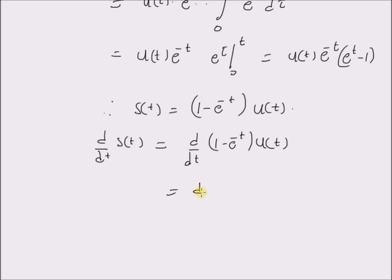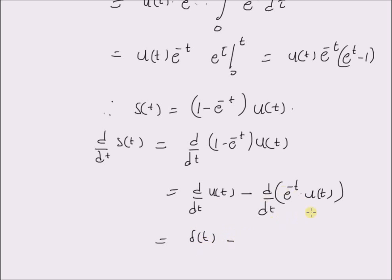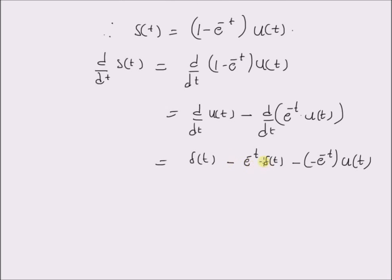This is equal to the derivative of the unit step signal minus the derivative of the product e power minus t into u of t. By using the product rule, the derivative of the unit step signal is the impulse signal delta of t. Minus, by using the product rule, we have e power minus t into delta of t minus minus e power minus t into u of t. Clearly this product e power minus t times delta of t is equal to e power 0, which is 1, and so these two terms cancel each other.